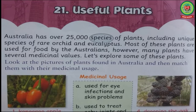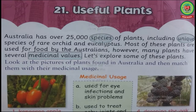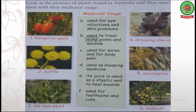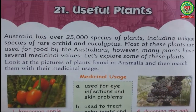Number one is 'species' — a group of plants having common characteristics. Number two is 'unique' — different from others. Number three is 'medicinal value' — used to cure disease or pain. Number four is 'key painting'. Number five is 'wounds' — a cut or hole in the skin. Number six is 'sores' — painful. And the last one is 'styptic' — a substance used to stop the flow of blood.